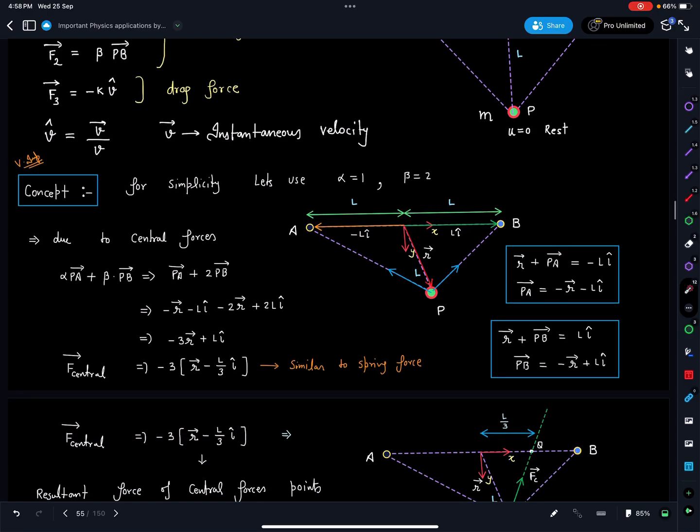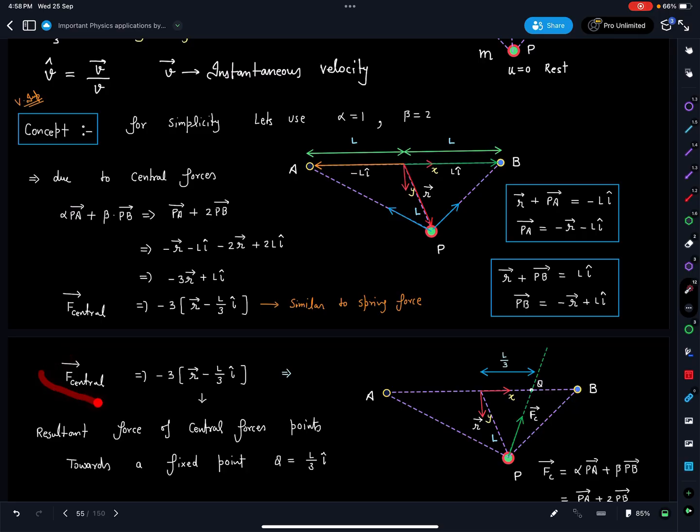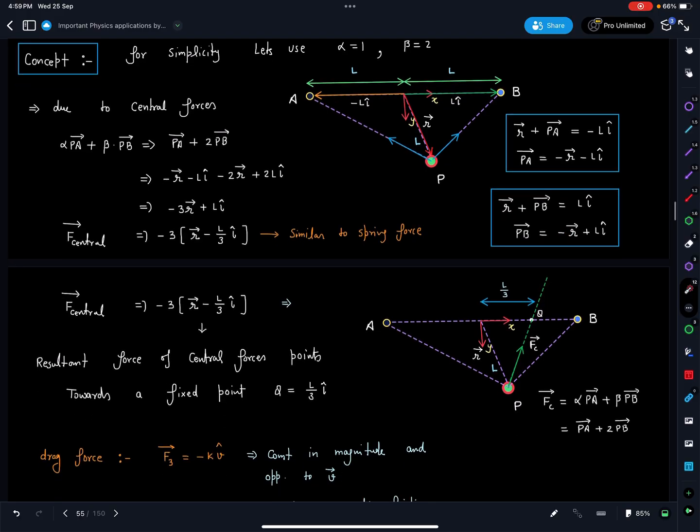Now F central force will become something like this: minus 3 times (r minus L by 3 i cap). What exactly this shows us is that the central forces are pointing towards a fixed point which is L by 3 i cap having position vector somewhere on this line. This point Q will be associated. So central forces will be pointing in this fixed direction. For alpha, beta, this value can come at some different point. Resultant force of central forces points towards a fixed point Q equal to L by 3 i cap.